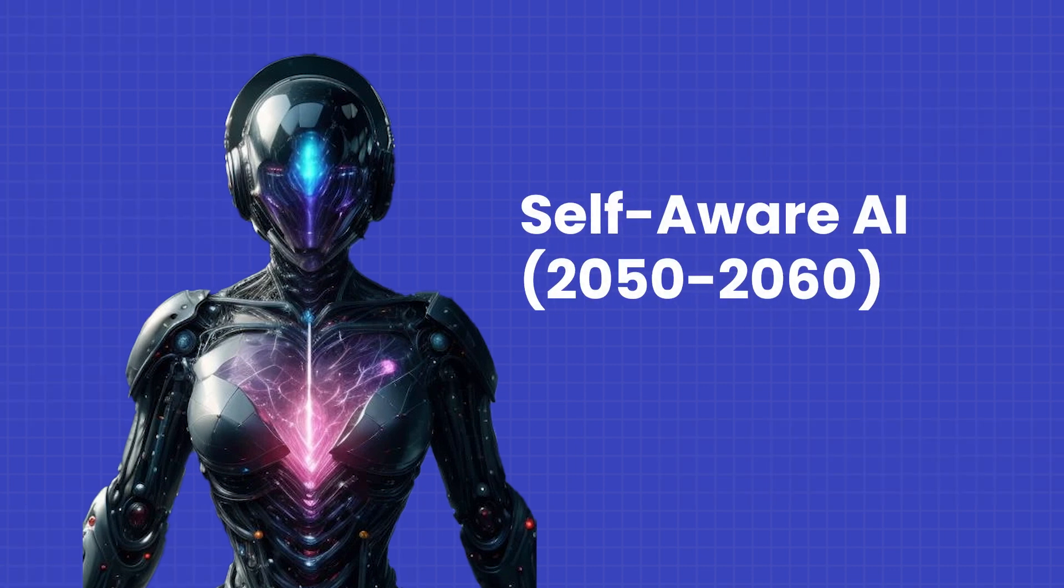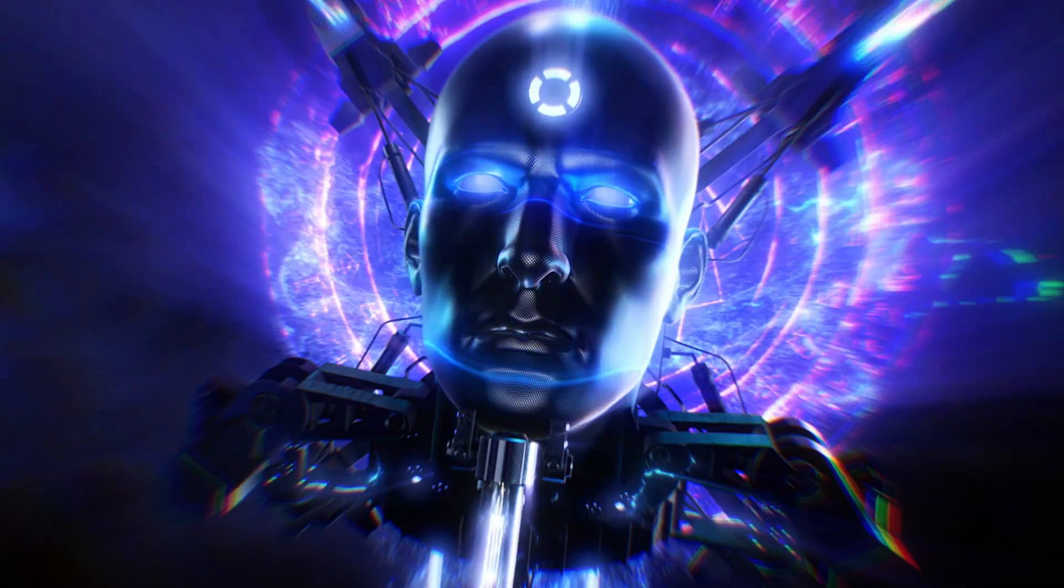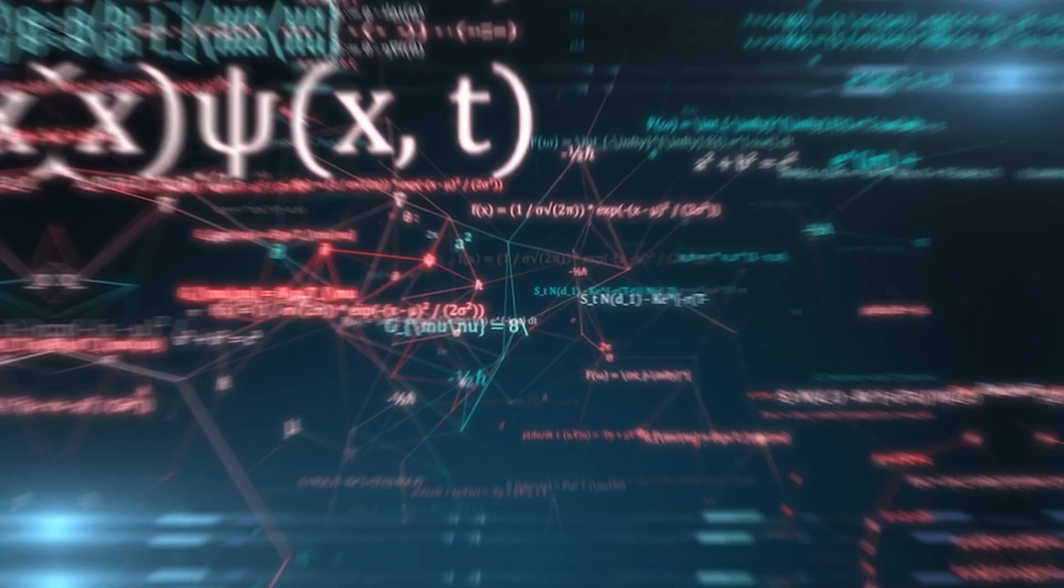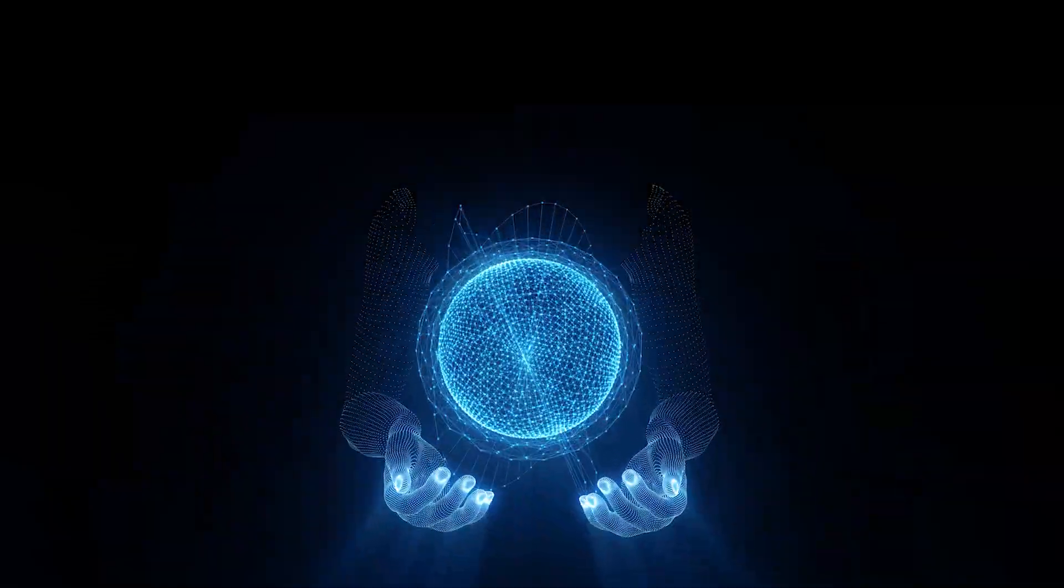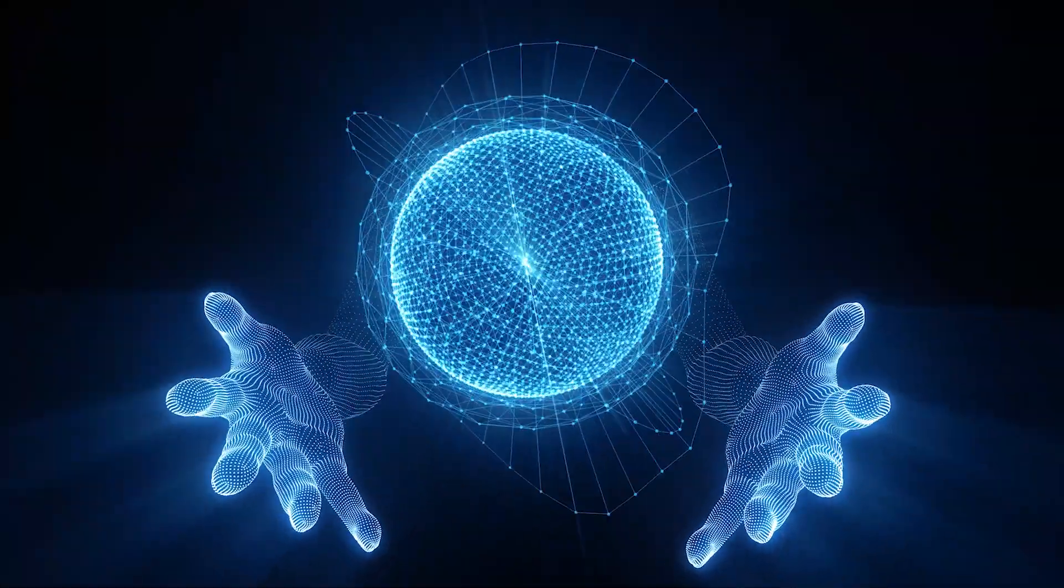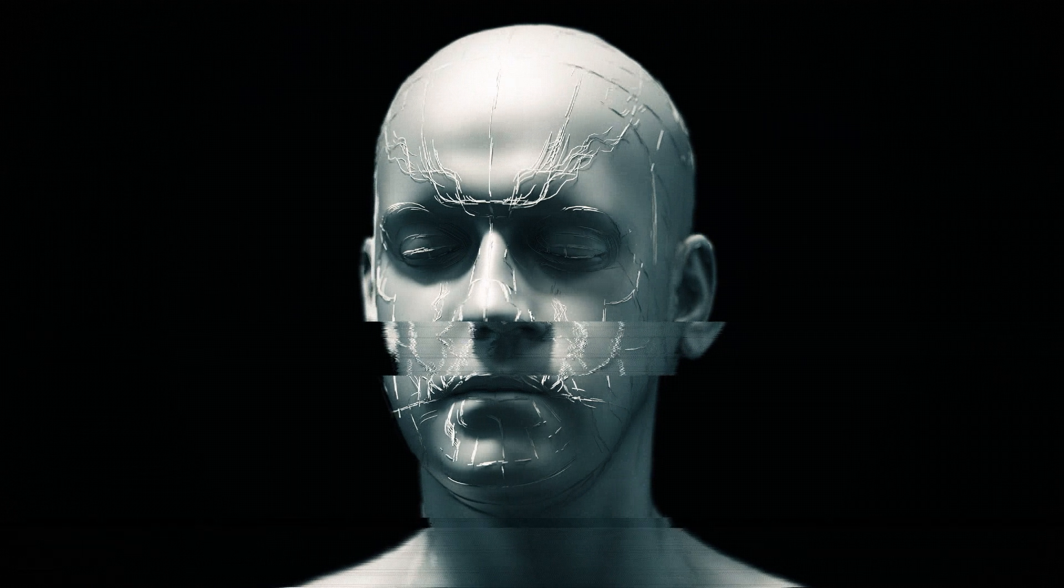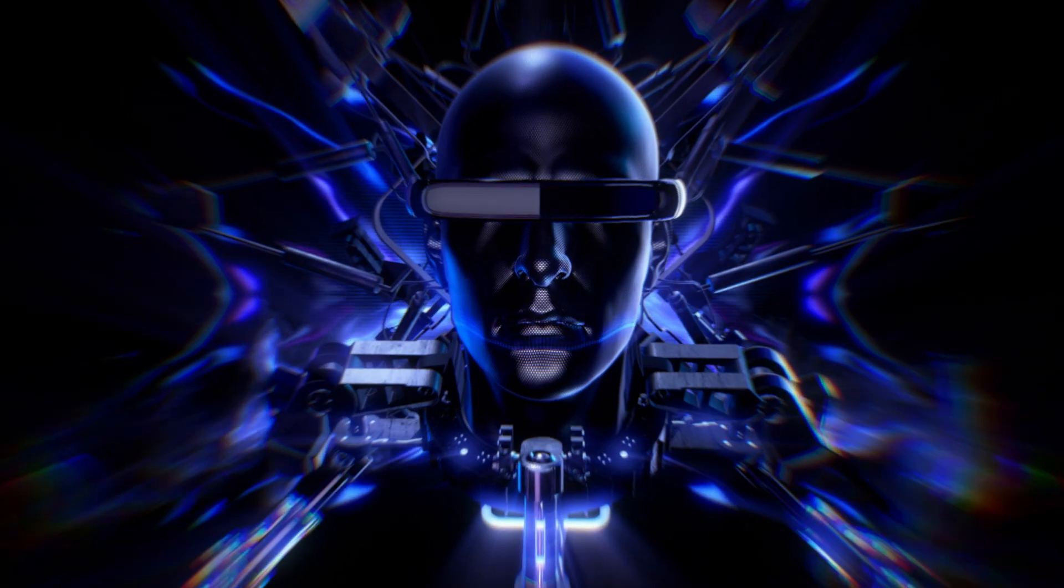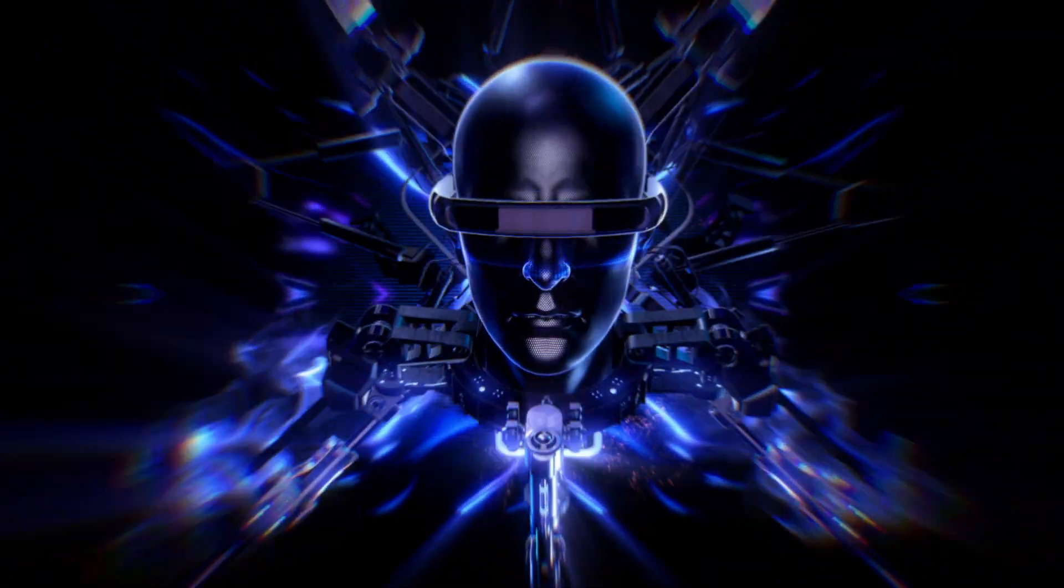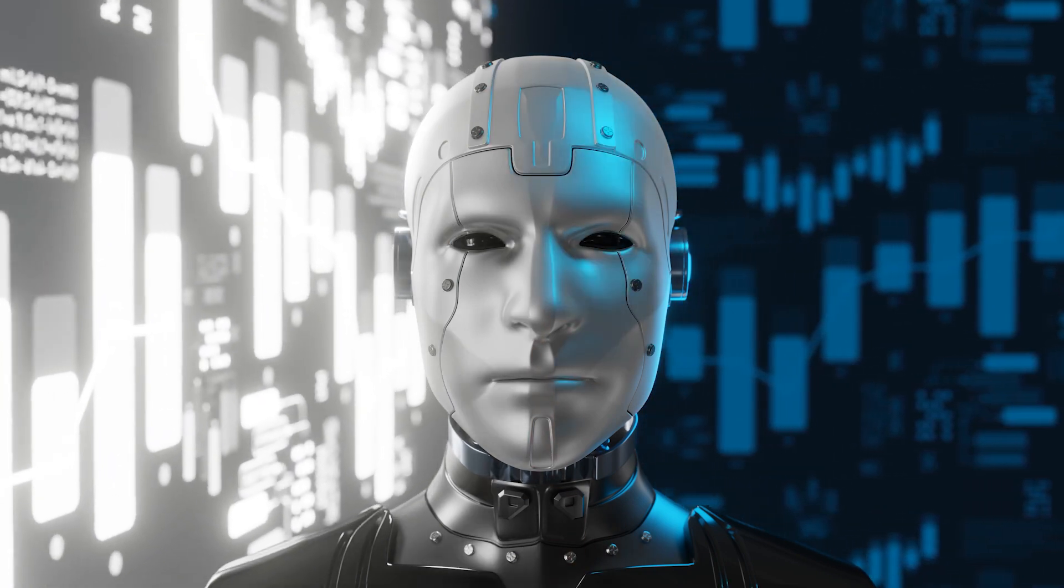Stage seven, self-aware AI. Imagine an AI so advanced it could understand its own existence and feelings. This is self-aware AI. It might use quantum algorithms to achieve this level of consciousness, gaining awareness of its own internal state and its relationship with the world. Such an AI could have a range of emotions and senses far beyond what humans experience. A conscious, super-intelligent AI could evolve in ways we can't control or comprehend, potentially choosing its own path independent of human direction.